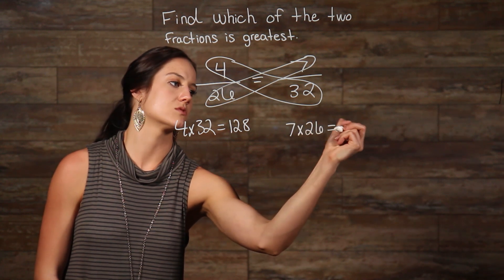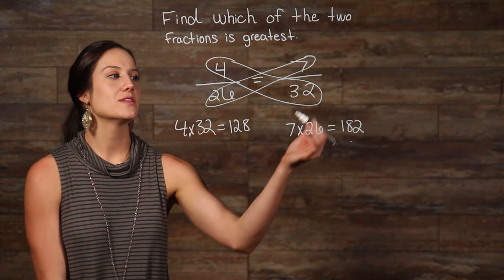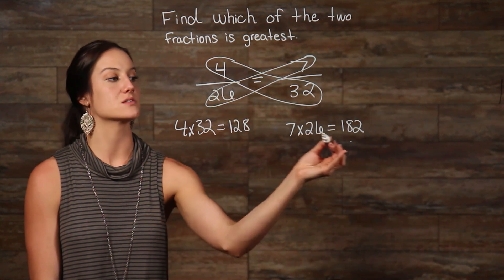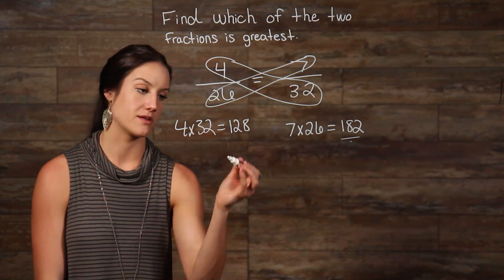We know that 7 over 32 is greater than 4 over 26, because 182 is greater than 128.